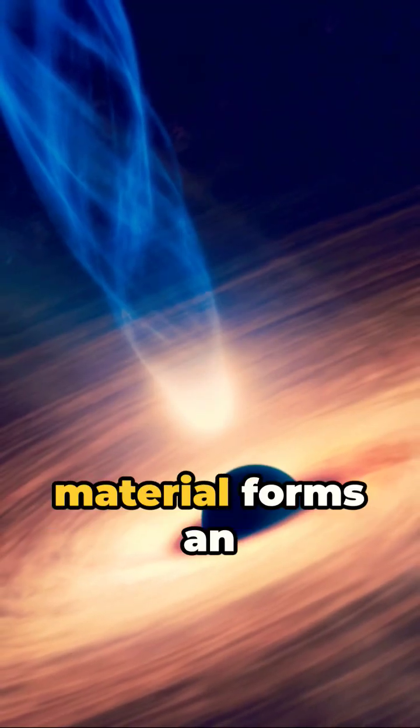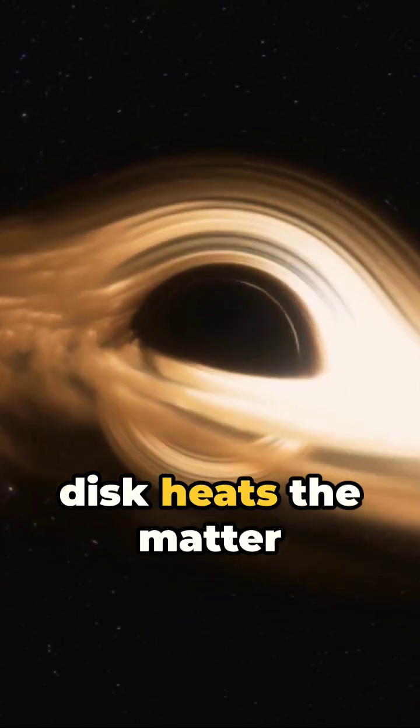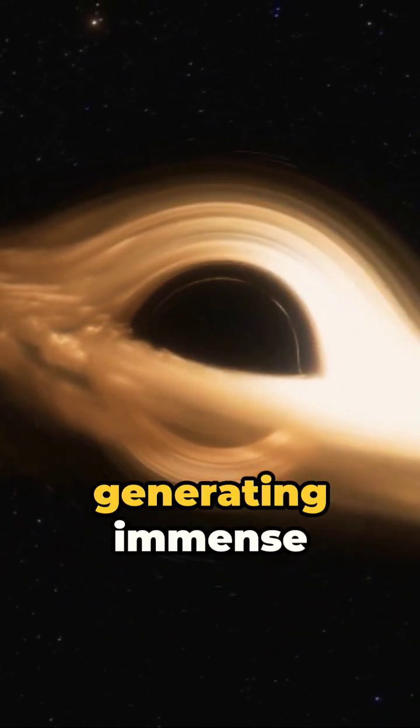As this infalling material forms an active accretion disk around the black hole, friction within this disk heats the matter to extreme temperatures, generating immense light across multiple wavelengths, from radio waves to x-rays and gamma rays.